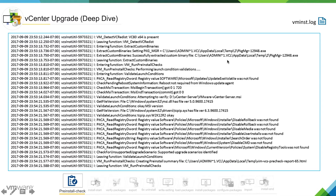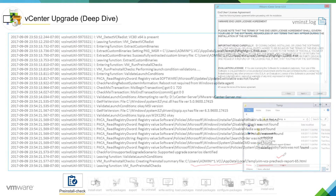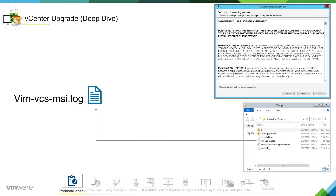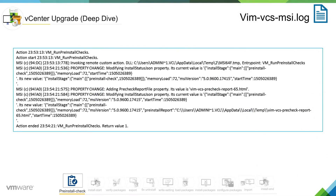This is a continuation of the same log. The installer is checking, and at this stage it has finished the check and created the vimvcsprecheck report we saw earlier. In vimvcs-msi.log, this log is generated by Windows installer. It is saying the same thing as vminstall.log, just in a Windows way. It is not as descriptive, but return value 1 means whatever the installer was intended to do was successful.